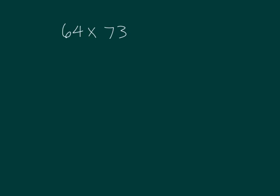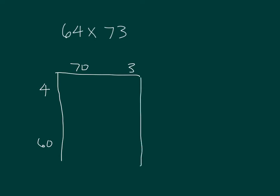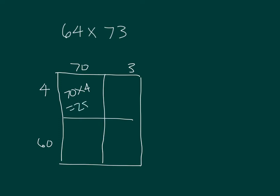Let's figure out an area model for 64 times 73. What can we break apart 73 into? 70 and 3. So we get: 70 times 4 equals 280, 4 times 3 equals 12, 60 times 70 equals 4,200, and 60 times 3 equals 180.